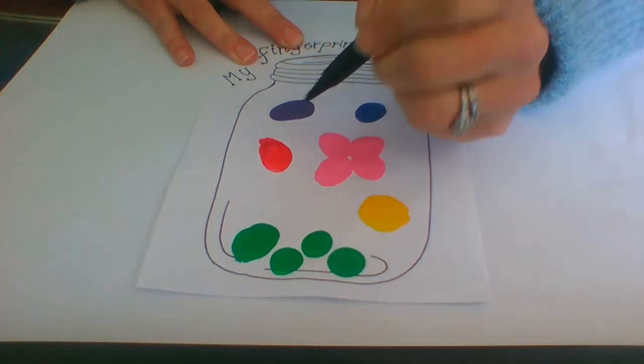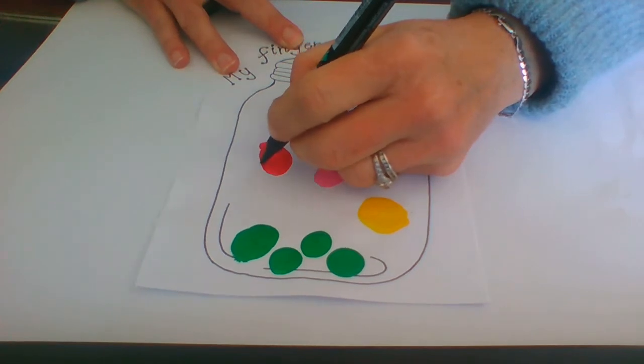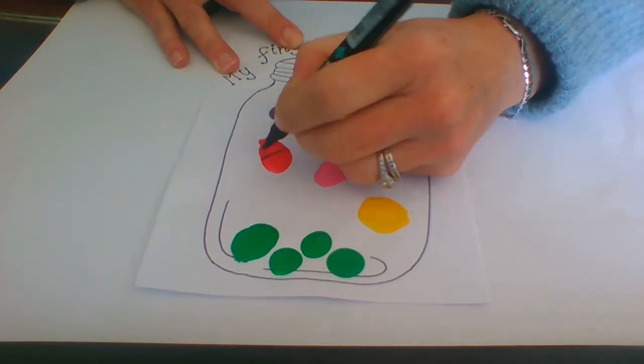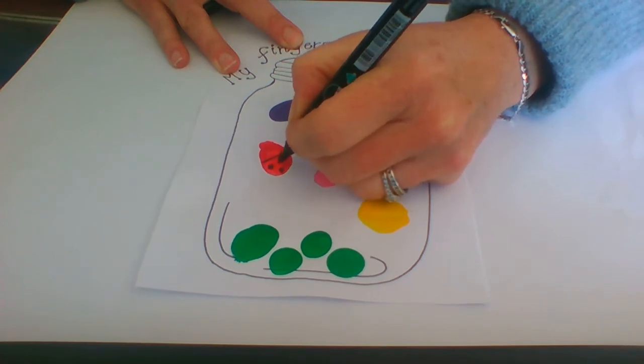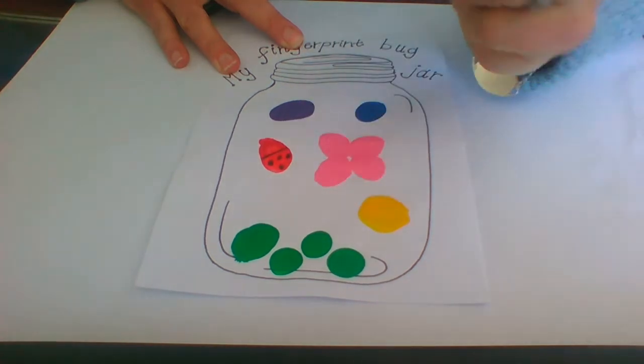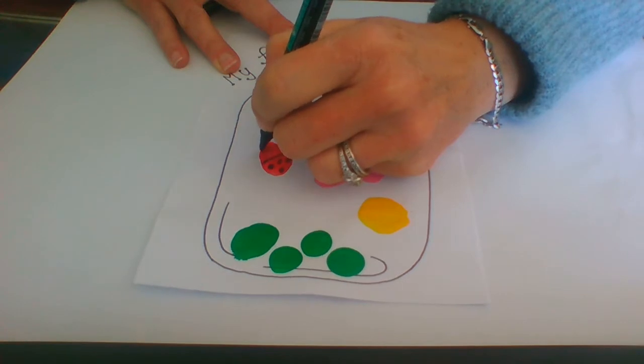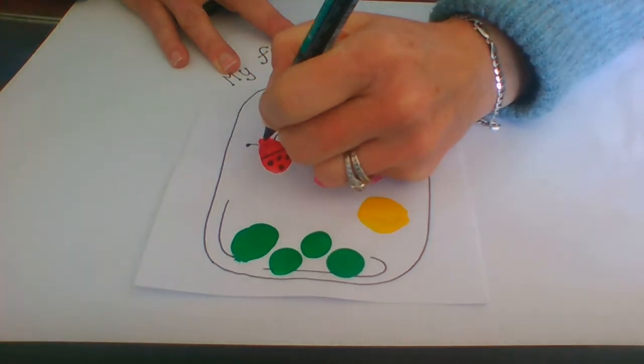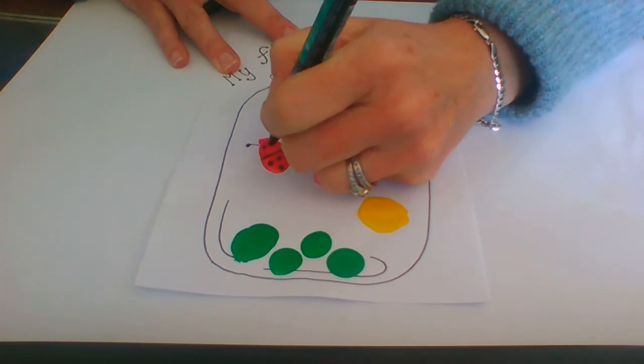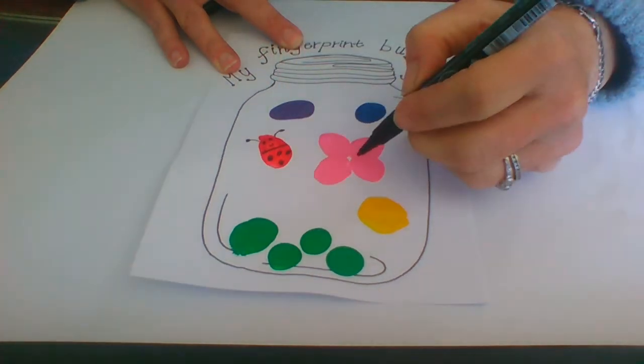So this little red one here, I'm going to make into a ladybird. So what I'm going to do is just do koki like that. And then I'm going to color in the little black spots. They can have little feelers and then some eyes. You can even do them with a little smiley face.